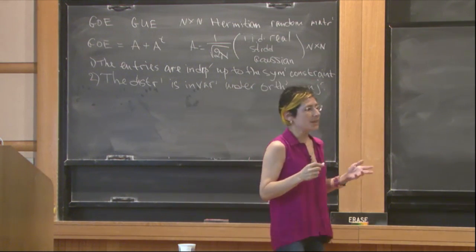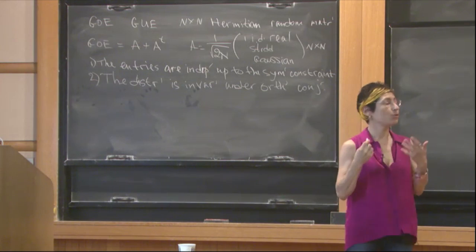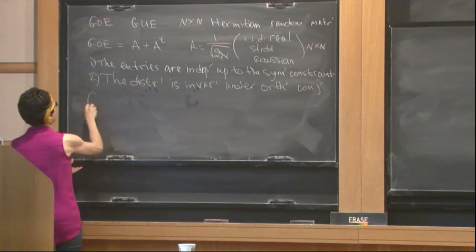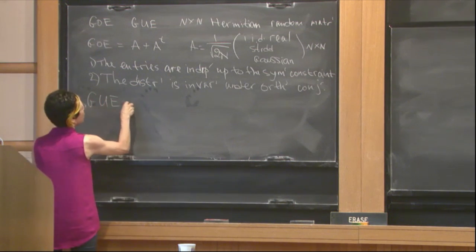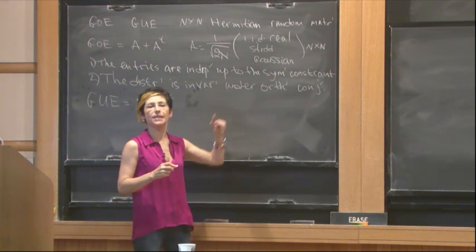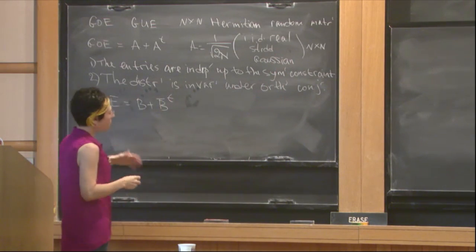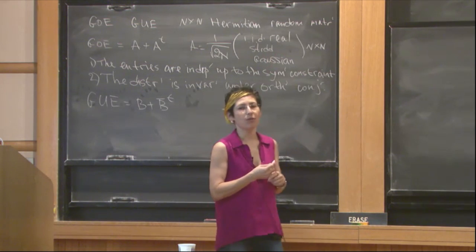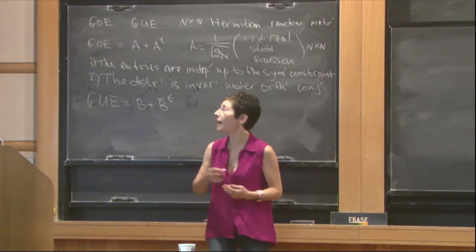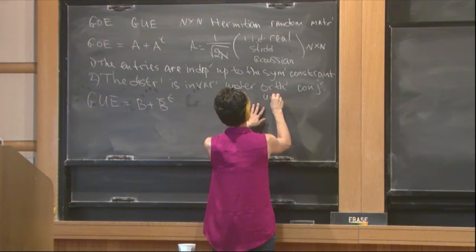The Gaussian unitary ensemble, about which you already heard in yesterday's talks of Paul and today a little bit in the talk of Kevin, is defined in a similar way. GUE is equal to B plus B conjugate transpose, and now it's almost the same matrix except that the entries are complex. In particular, the diagonal entries of the unitary ensemble are real, and both properties hold except that now it's invariant under unitary conjugation.